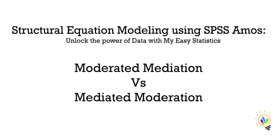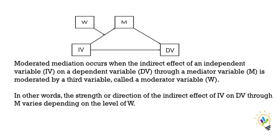In this video I am going to discuss moderated mediation versus mediated moderation. Moderated mediation occurs when the indirect effect of an independent variable (IV) on a dependent variable (DV) through a mediating variable M is moderated by a third variable called a moderating variable W. In other words, the strength or direction of the indirect effect of IV on DV through M varies depending on the level of W.